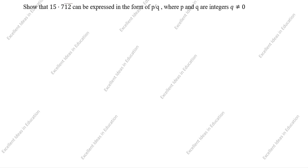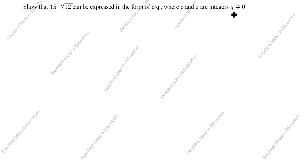Hi friends, welcome to my channel Excellent Ideas in Education. Today we are going to solve this number system problem: 15.712̄2̄ can be expressed in the form of p by q, where p and q are integers and q is not equal to 0.